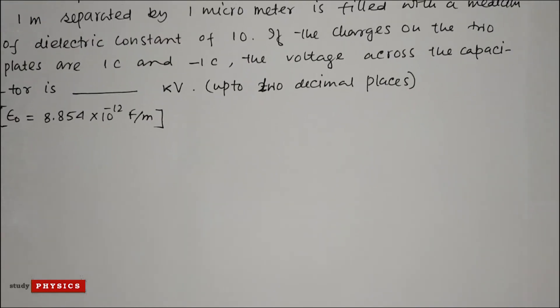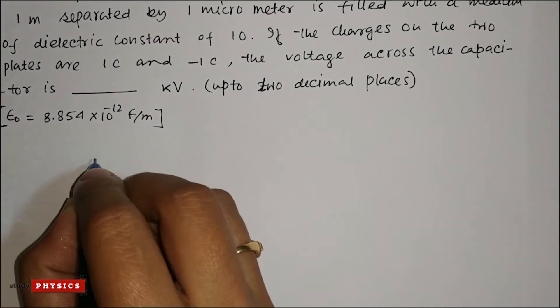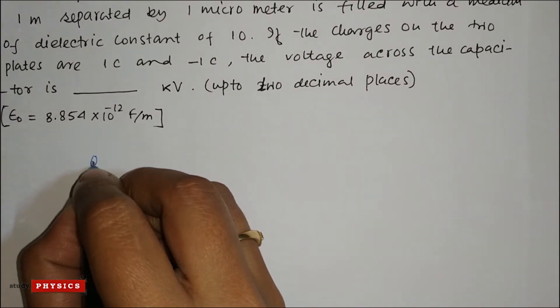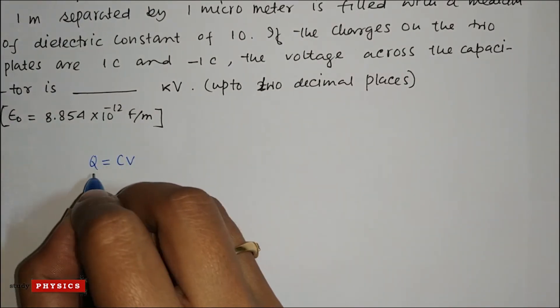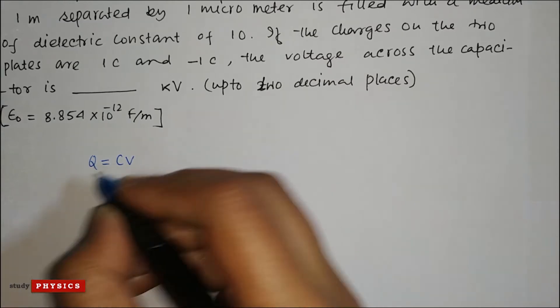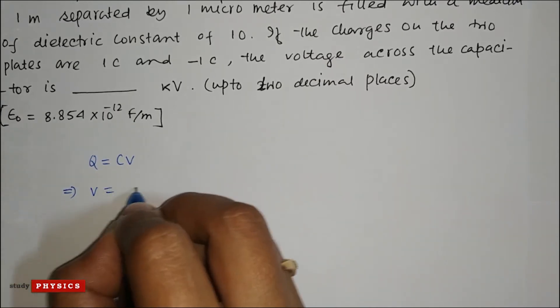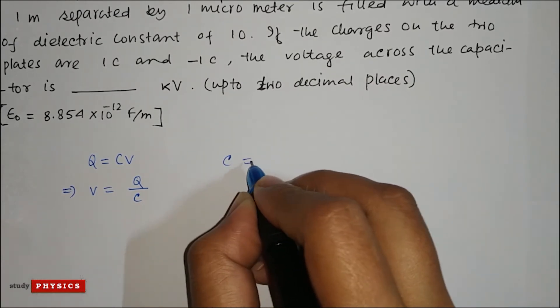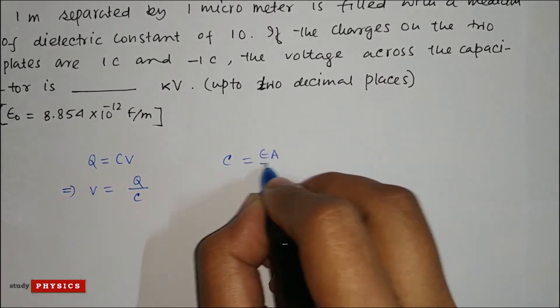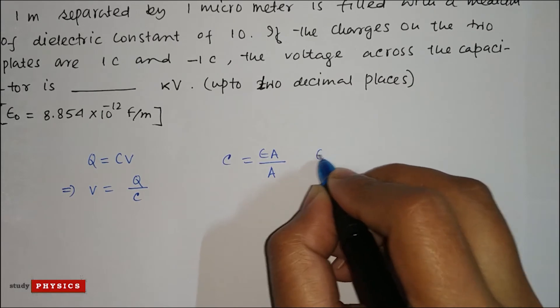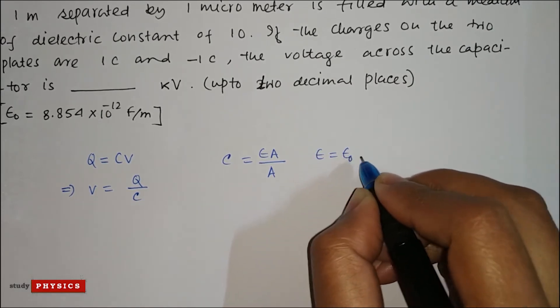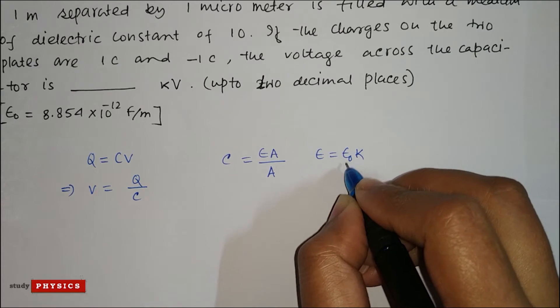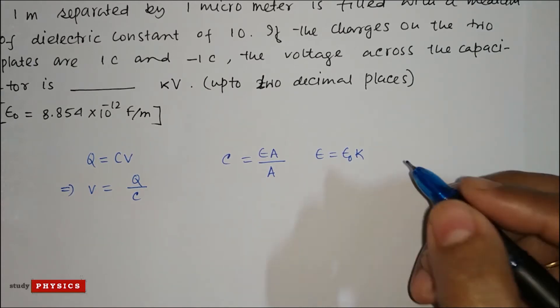Okay, so first we know that Q equals CV. Q is charge, C is capacitance, and V is voltage. So V is Q divided by C, and capacitance C is epsilon A divided by d, and epsilon is epsilon naught K. K is the dielectric constant and epsilon naught is the permittivity of free space.